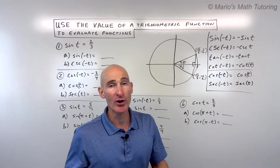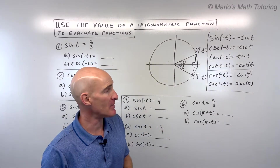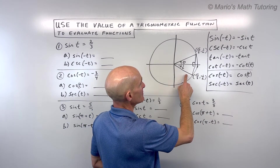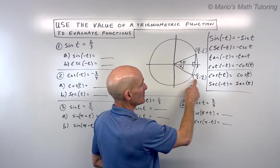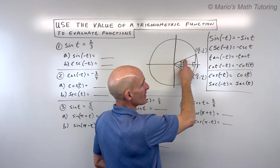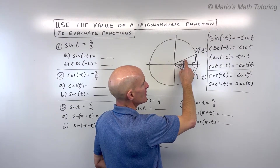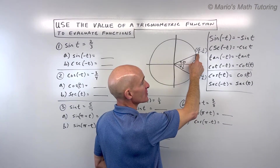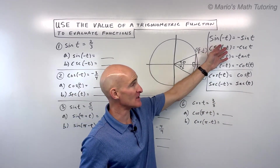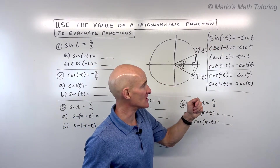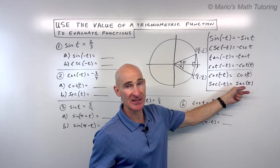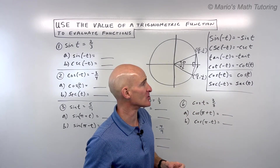Cosine and secant are what we call even functions. If you take cosine of a negative angle — say cosine of negative 30 — you get root 3 over 2. If you take the cosine of positive 30, you also get root 3 over 2. You get the same answer; it's not going to be the opposite like with odd functions. Same thing with secant: secant of the negative angle equals secant of the positive angle.